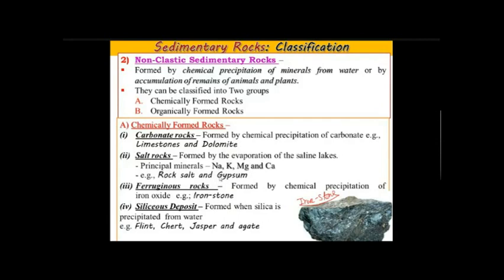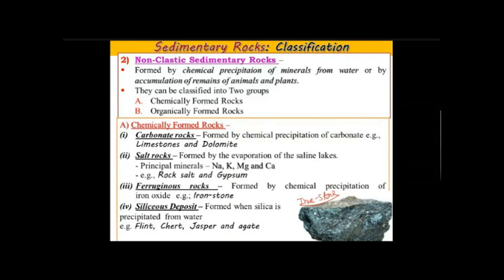Ferruginous rocks — ironstone — consist of high proportion of iron-bearing minerals like hematite, which is the ore of iron. Siliceous deposits are formed when silica is precipitated from water; an example is chert. Organically formed rocks require the plants or animals to die; the dead bodies of plants or organisms form this type of rock.